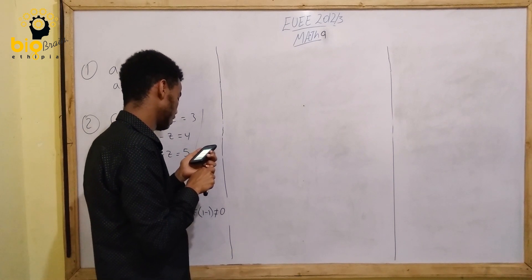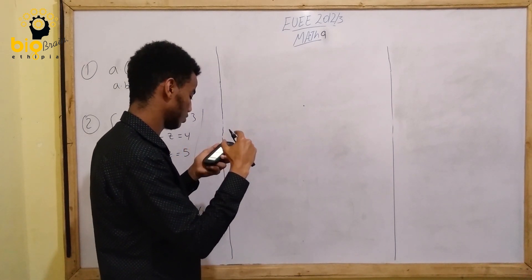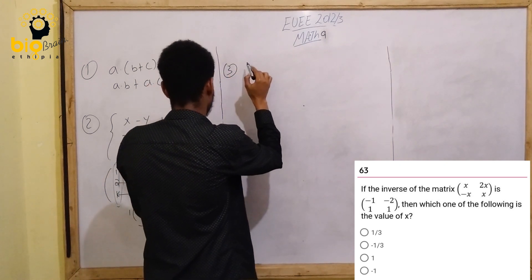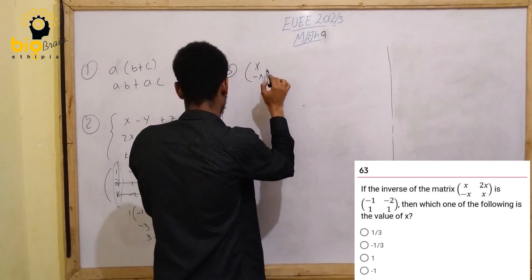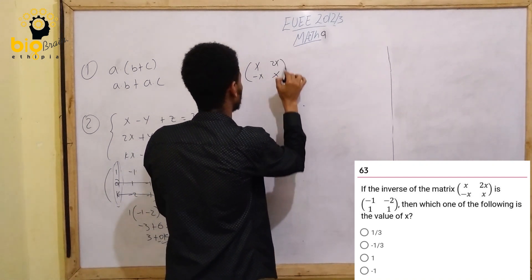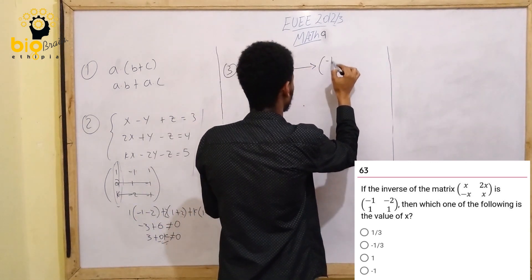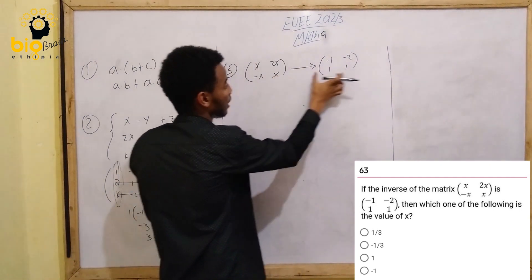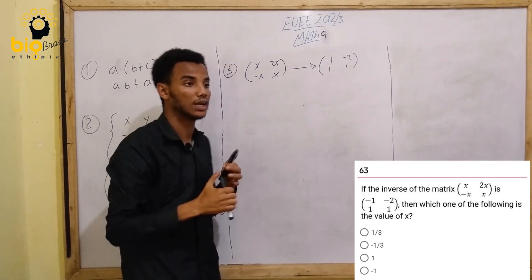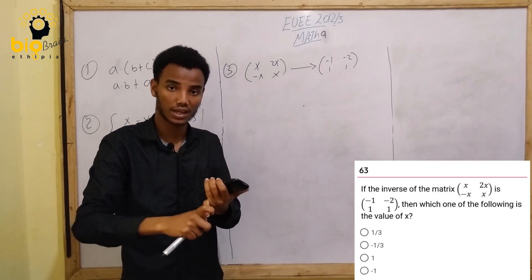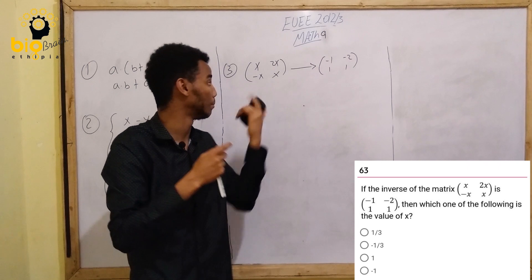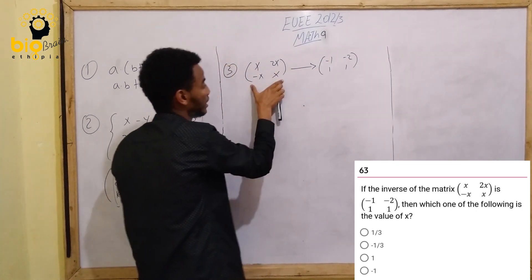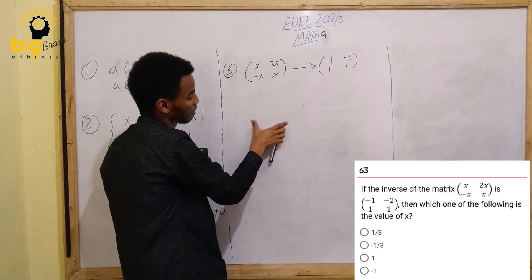Next: if the inverse of a matrix is given, find the value of X. The inverse matrix is given, and we need to identify X. The original matrix multiplied by its inverse gives the identity matrix, so we use that relationship to find the unknown values.